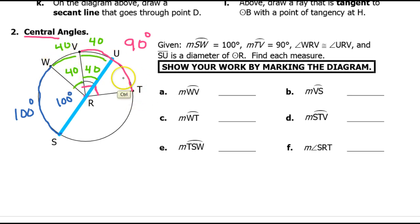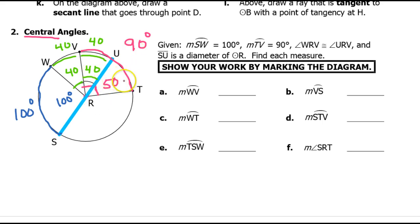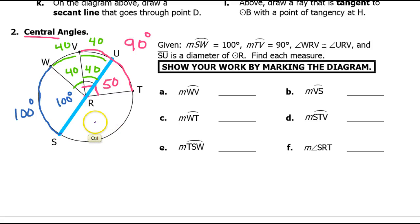Arc TV and angle VRT are both 90 degrees, but now we know one side of that is 40. So to make 90, this piece over here would have to be 50, because 40 plus 50 equals 90. Now I have another semicircle on the other side — this has to add up to 180. If this is 50, then the other part must be 130, because 130 and 50 make 180 together. So that arc is also 130.